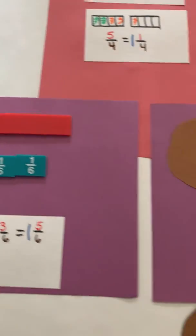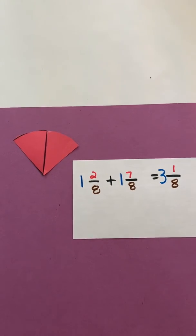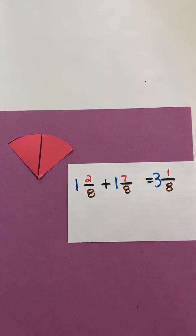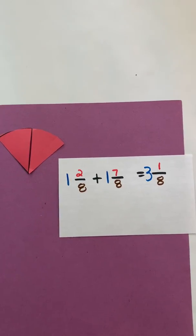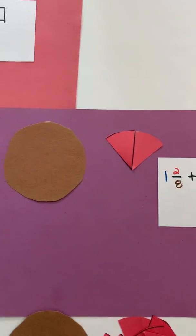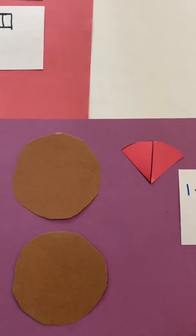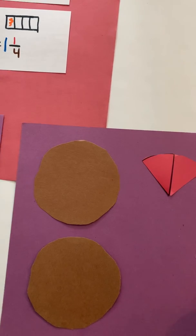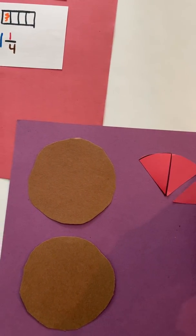So let's look at one more model. This time we're going to use fraction circles. We're going to add one and two-eighths plus one and seven-eighths to give us a sum of three and one-eighths. Okay, so this time we're adding a mixed number plus a mixed number. So you can see I have one and two-eighths, and then I'm going to add on seven-eighths. So what I'm going to do here is add it on, and I'm going to go ahead and add on my seven-eighths.